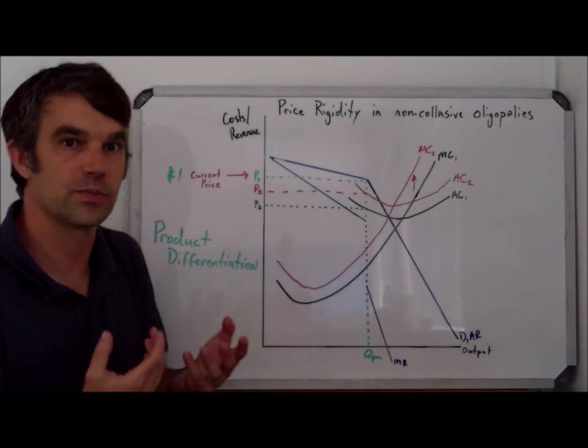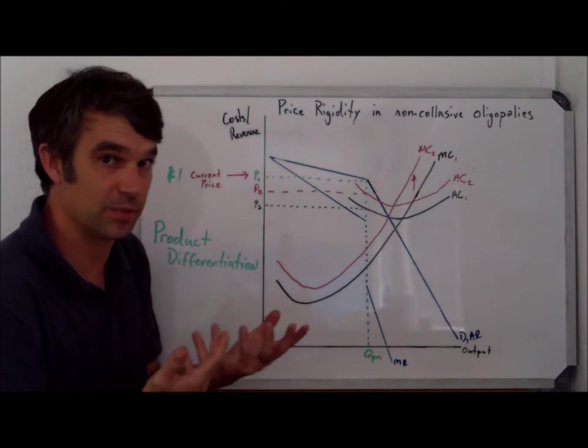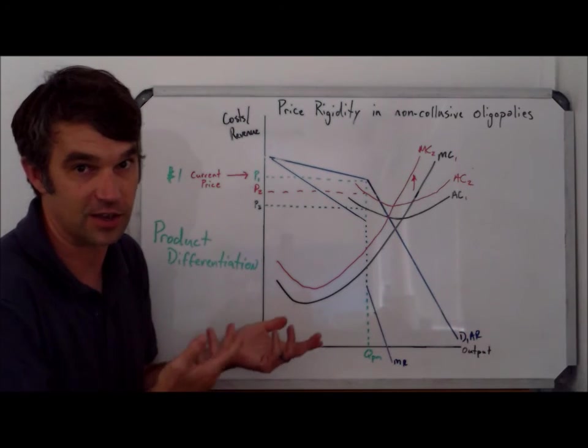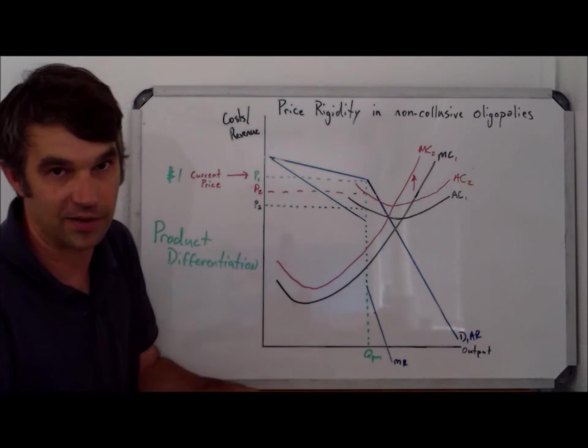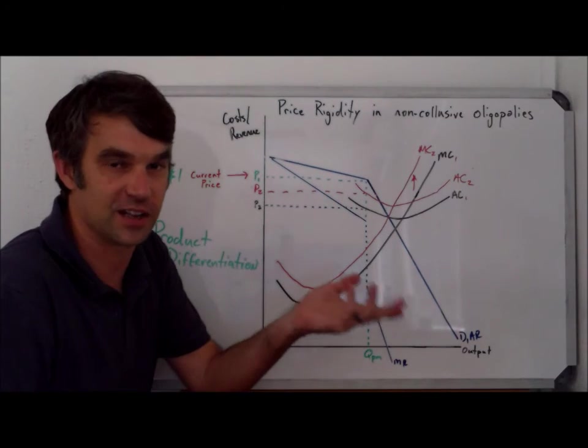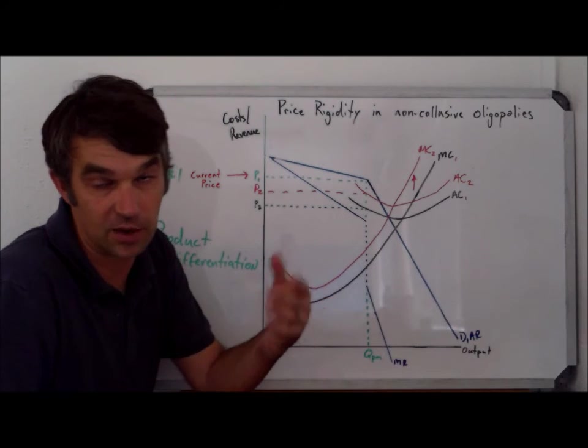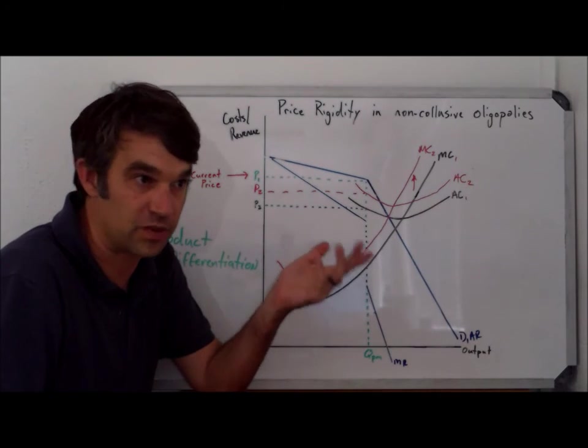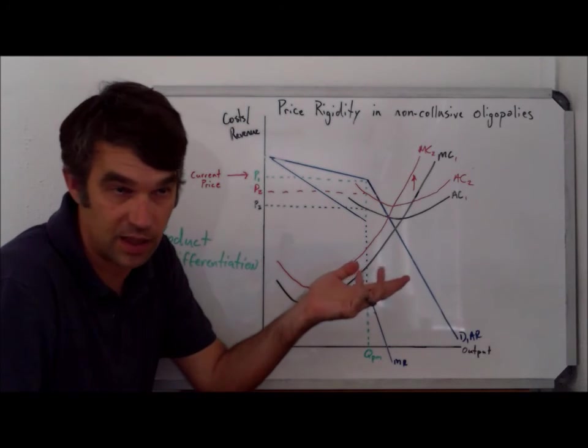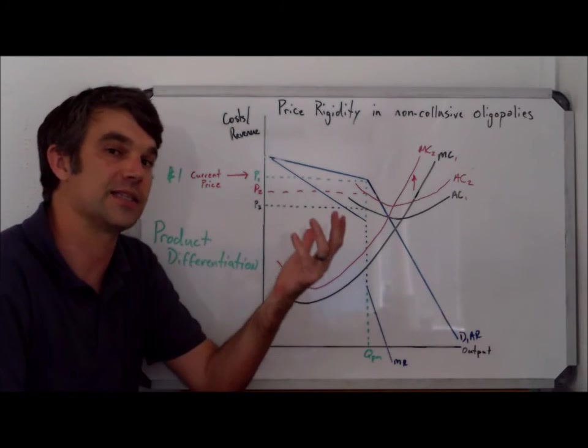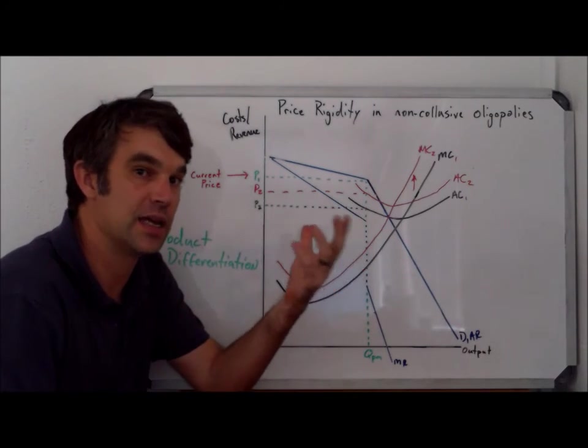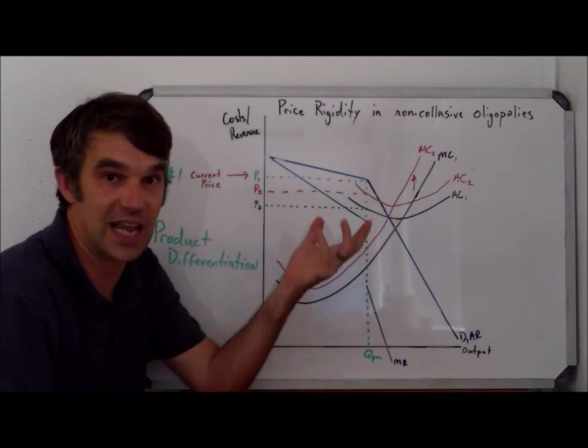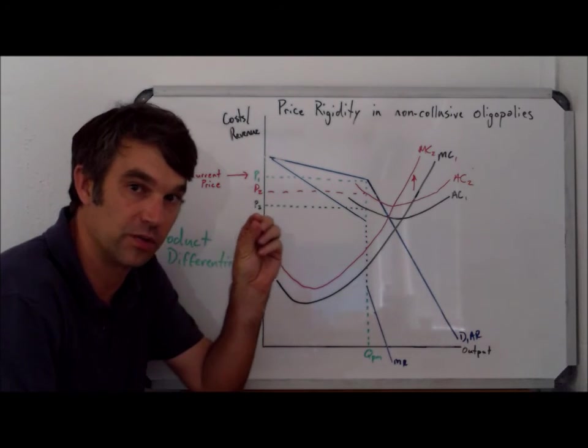So you'll see the firms put a lot of money into convincing people that their product is different than the other one. Think of the amount of commercials that are out there that are trying to convince you that Coke is a better choice than Pepsi or vice versa. It could be a commercial, it could be sponsorship of a team or a player or something like that. Whatever it is, it's going to take a lot of money to try to give the firm some advantage so that they can have some control over their price.